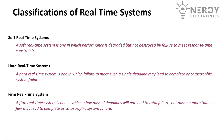Now coming to the classifications of real-time systems. The first is soft real-time systems. A soft real-time system is one in which performance is degraded but not destroyed by failure to meet response time constraints. If the expected response time is, say, two seconds and it is not met, the system is not classified as a failure and there are no catastrophic effects. For example, an ATM machine — even if a deadline is not met, say money should be dispensed within five seconds but it isn't, that is not a failure and does not lead to any catastrophe, only some inconvenience.